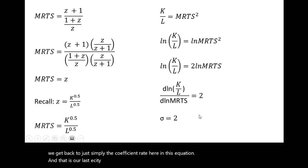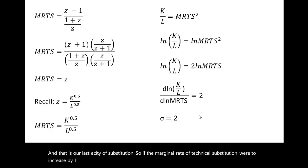So if the marginal rate of technical substitution were to increase by 1%, the capital labor ratio would increase by 2%. I will stop here.